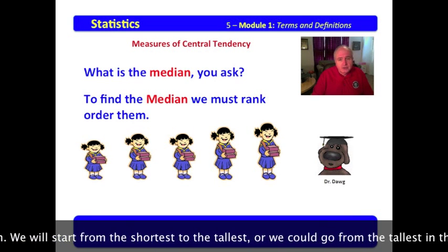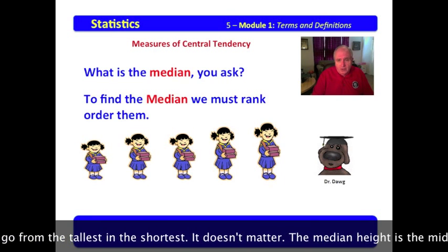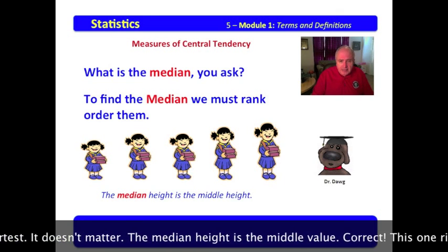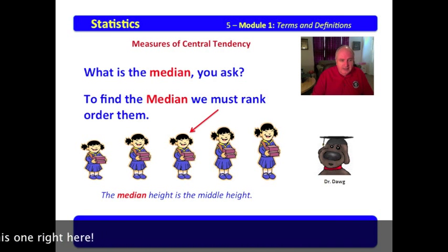To find the median, we must rank order them, and we will start from the shortest to the tallest, or we could go from the tallest to the shortest. It doesn't matter. The median height is the middle value. Correct, this one right here.